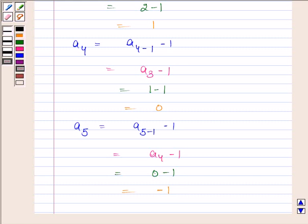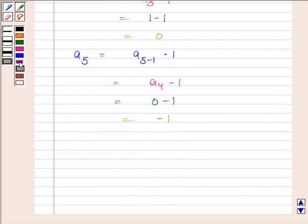Hence, the required first 5 terms of the sequence are 2, 2, 1, 0, and -1.